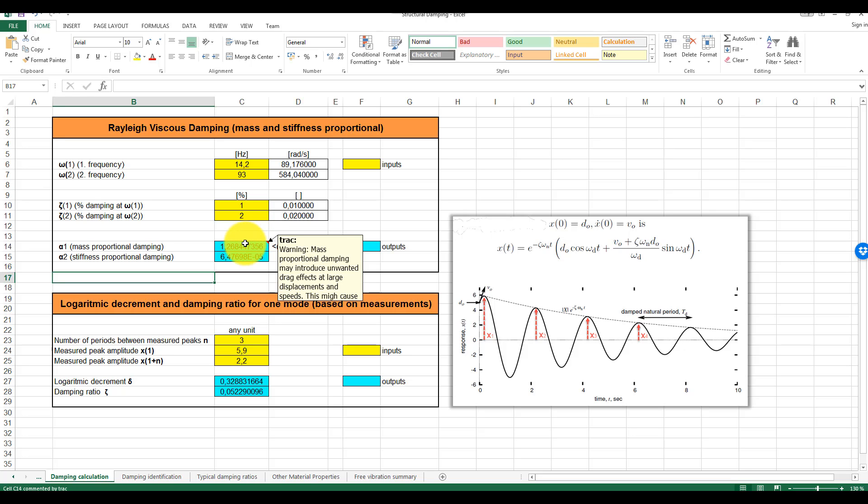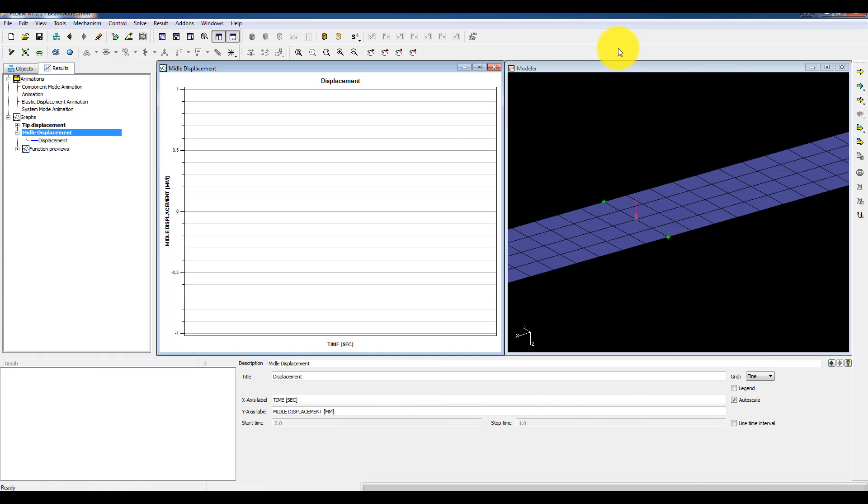And that gives me the alpha factors of 1.26. And then I will use these two values in FEDEM in order to damp the vibration.